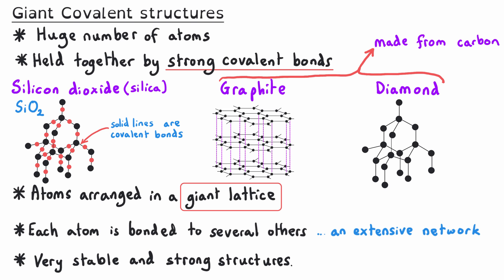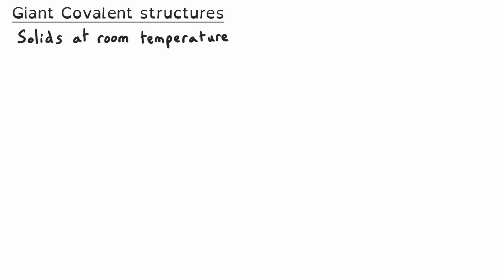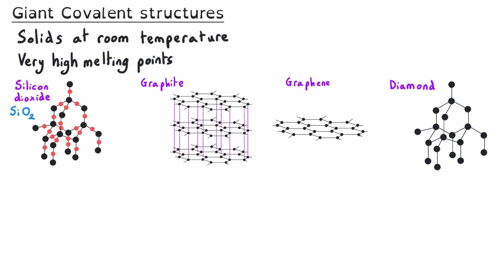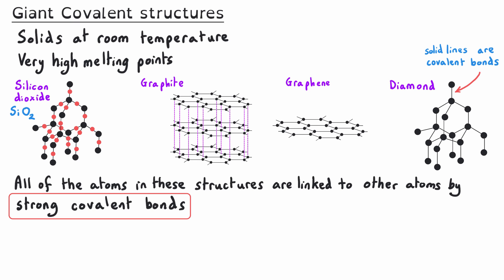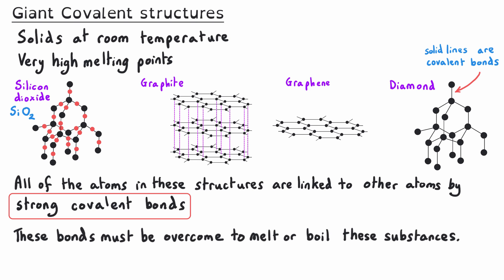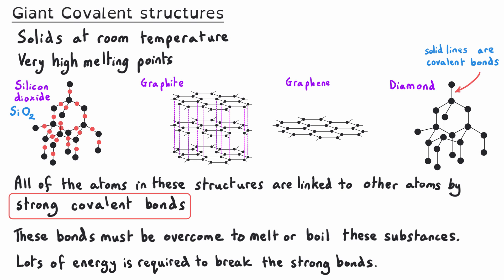As a result of this giant covalent lattice, the structures themselves are very strong and very stable. Substances that consist of giant covalent structures are solids at room temperature because they have a very high melting point. Giant covalent structures are not made up of molecules, but a huge number of atoms in a repeating pattern. All of the atoms are linked by strong covalent bonds, and these bonds must be overcome in order to melt or boil these substances. Since these bonds are very strong and there is a huge number of them, lots of energy is required to break them all.